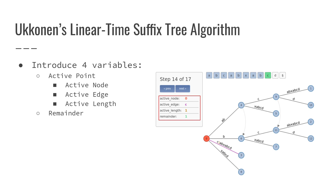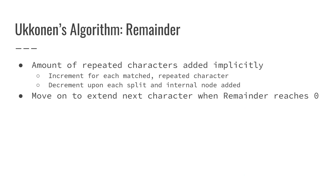Four variables are necessary for this algorithm. There is the active point — a triple of an active node, active edge, and active length — and another variable called the remainder. The remainder can be considered as the amount of repeated characters that are being added implicitly; each time we see a repeated character, we increment the remainder. Once we go back and deal with those repeated characters, we decrement the remainder for each split and internal node added to the suffix tree, and once the remainder reaches zero, we move on to the next step.